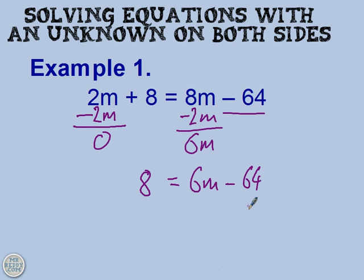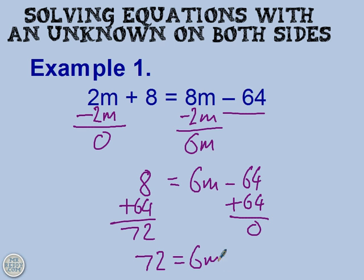And we can solve that in the way that we've solved equations before. So we would want to add 64 onto both sides. And add 64 on over here. And you get 72. And that's 0. So now you've got 72 equals 6m. And you can very easily solve that and find that m equals 12.